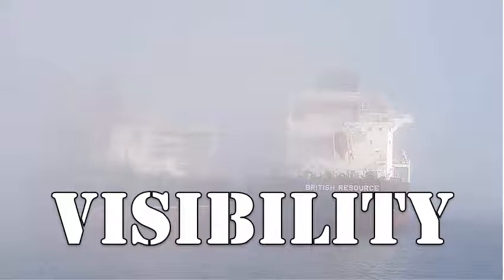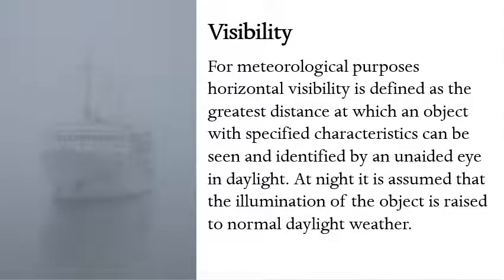Visibility for meteorological purposes is horizontal visibility, defined as the greatest distance at which an object with specified characteristics can be seen and identified by an unaided eye in daylight. At night, it is assumed that the illumination of the object is raised to normal daylight conditions, so it pertains to the distance you can see without binoculars.